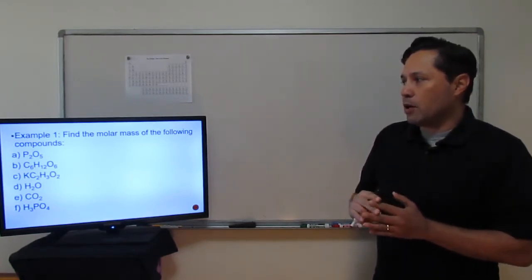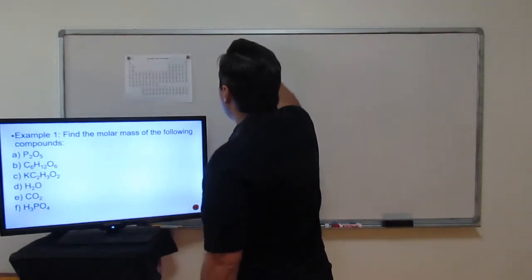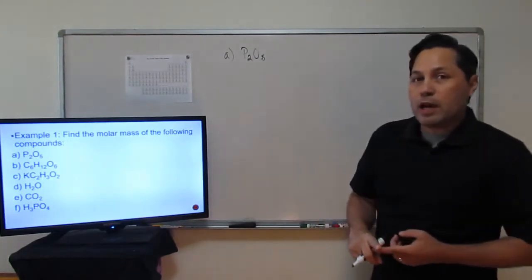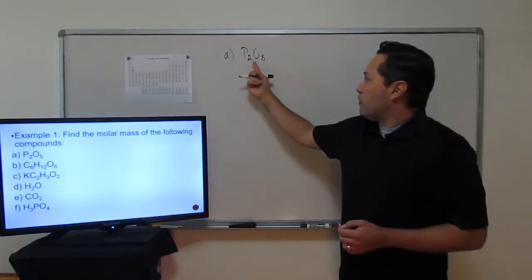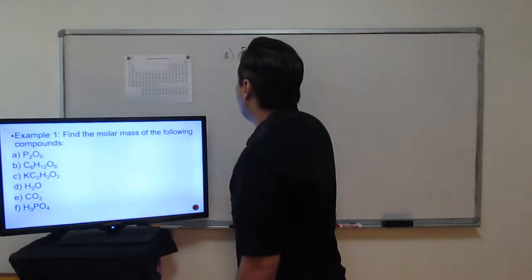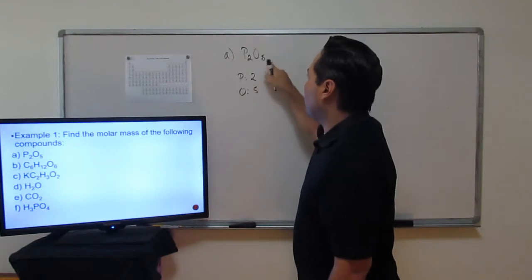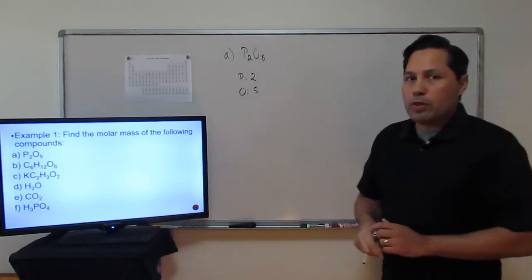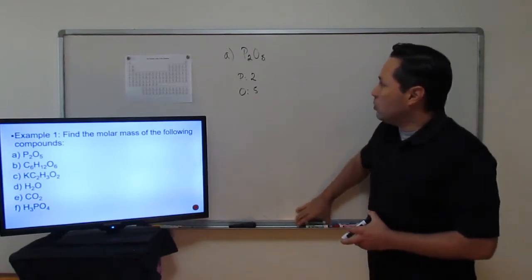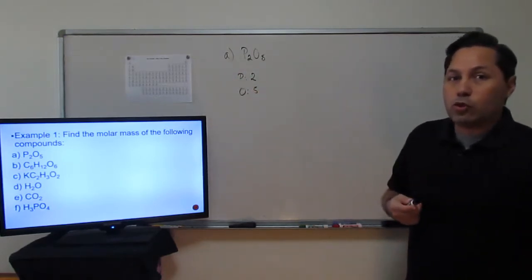For diphosphorus pentoxide, we're going to go ahead and solve for it. A: P₂O₅. First you count how many atoms of each you have. So for each element, you have two phosphorus and five oxygens. The subscript on the bottom right corner tells you how many of each atom you have. Next, you look on the periodic table for their mass and use that to solve for the molar mass.